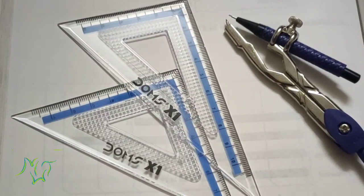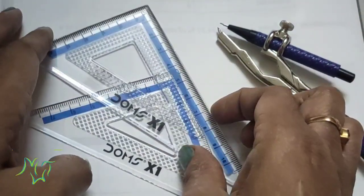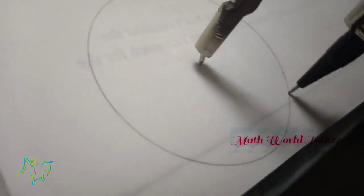To divide the circle into three equal parts, first we divide the circle into six equal parts.